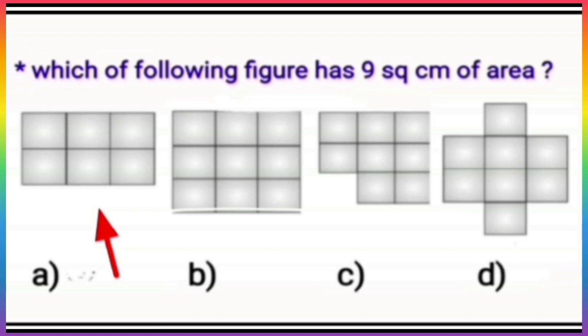In option A, there are 6 squares, so its area will be 6 square centimeters. And in option B, there are 9 squares, so it becomes 9 square centimeters. Then in option C, it has 8 square centimeters of area, and option D also has 8 square centimeters. So we need 9 square centimeters.